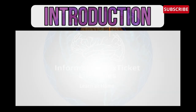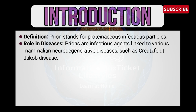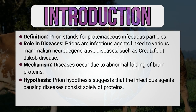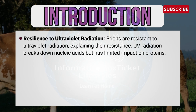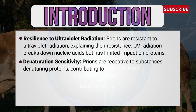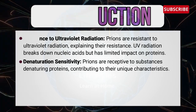Let's begin with the introduction. Prions stands for proteinaceous infectious particles. Prions are infectious agents linked to various mammalian neurodegenerative diseases such as Creutzfeldt-Jakob disease. Diseases occur due to the abnormal folding of brain proteins. The prion hypothesis suggests that the infectious agents causing diseases consist solely of proteins. Prions are resistant to ultraviolet radiation — UV radiation breaks down nucleic acid but has limited impact on proteins. Prions are also receptive to substances that denature proteins, contributing to their unique characteristics.